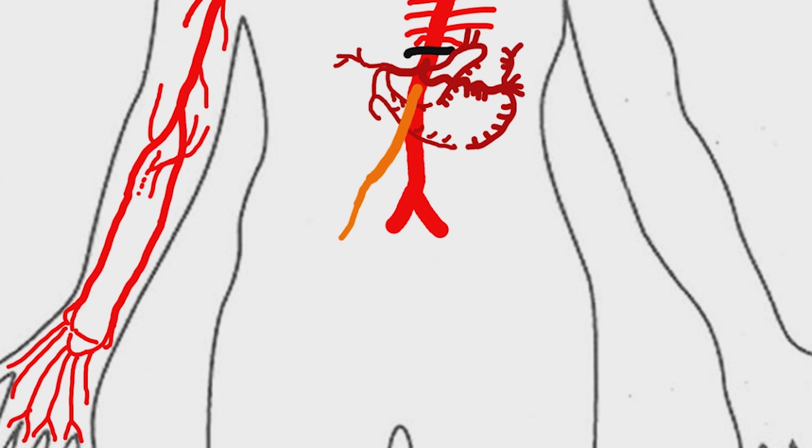These structures correspond to the embryonic midgut. It gives rise to inferior pancreaticoduodenal artery, jejunal arteries, ileal arteries, iliocolic arteries, right colic, and middle colic arteries.